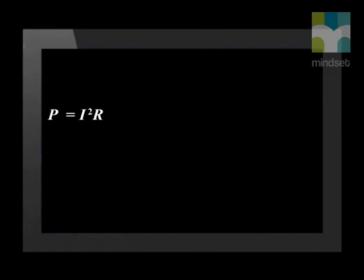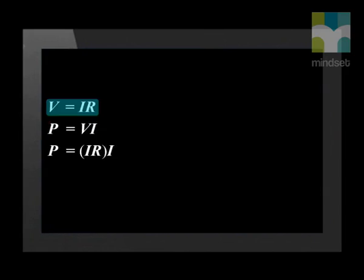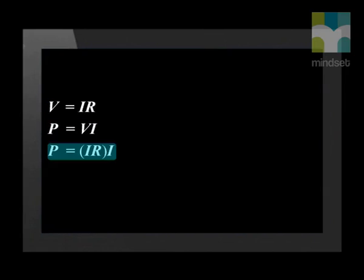There are two other equations that we can use to solve power equations in circuits. These are P equals I squared times R, and P equals V squared divided by R. To truly understand these equations, we need to see how we derive them. We use the combination of Ohm's law, V equals I times R, and our second equation for power, P equals V times I. If we substitute the V from Ohm's law into the power equation, we get P equals I times R times I. This gives us the first derived equation: P equals I squared times R.